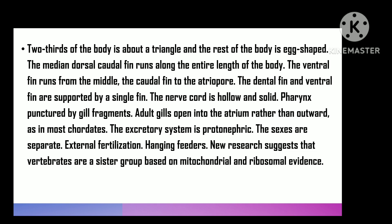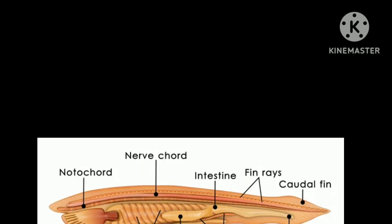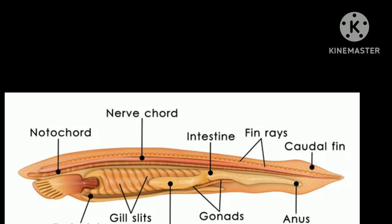The notochord is hollow and dorsal. The gut is ventral. The pharynx is perforated with gill slits. The gill clefts of an adult open to the atrium, not to the exterior as in most chordates. The excretory system is protonephric. Sexes are separate and fertilization is external. They are suspension feeders. Recent studies claim that they are the sister group of the vertebrates according to mitochondrial and ribosomal evidence.